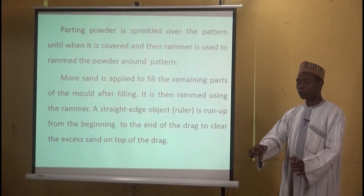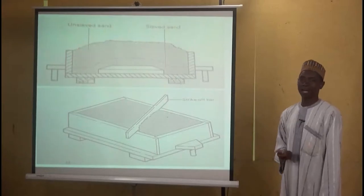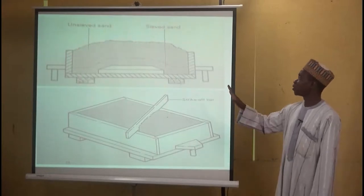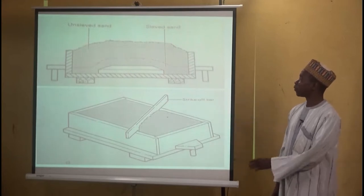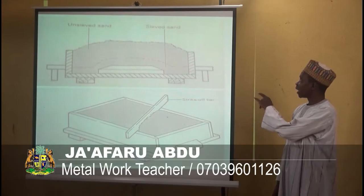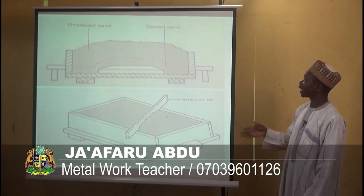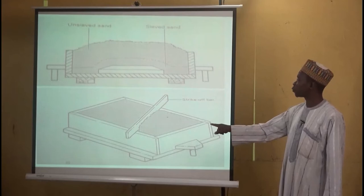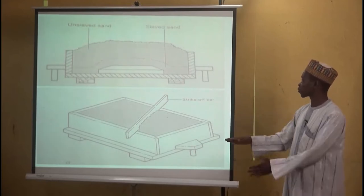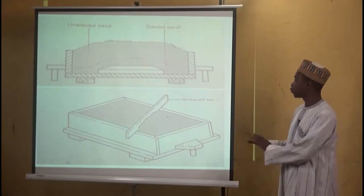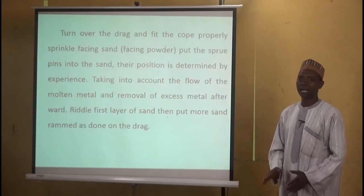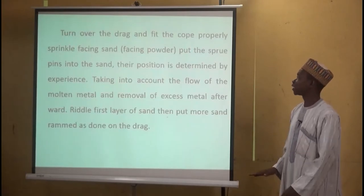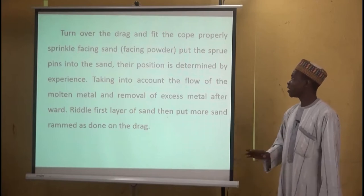You put the ruler from the beginning of the drag, draw it across, and clear all excess sand. Then you overturn the drag. On the sketch on the board, you can see the sieved sand sprinkled first, then the unsieved sand applied on top, rammed down. The next sketch shows how to use the straight edge object to strike off the excess sand. After doing that, you overturn the drag, place it on the surface, and sprinkle a facing powder. Then you locate where you put the two sprue pins.